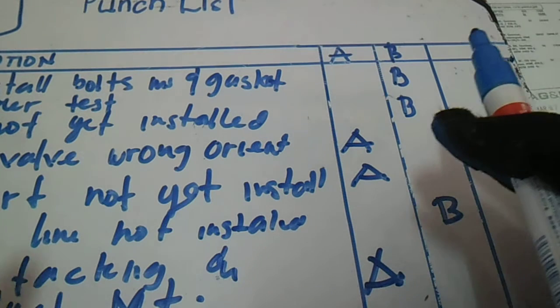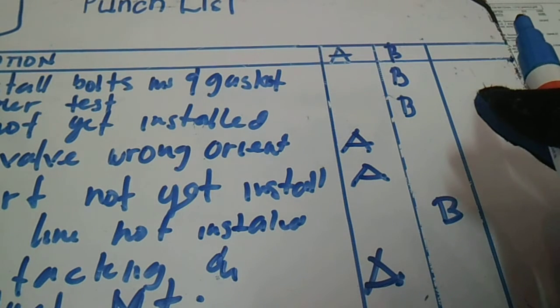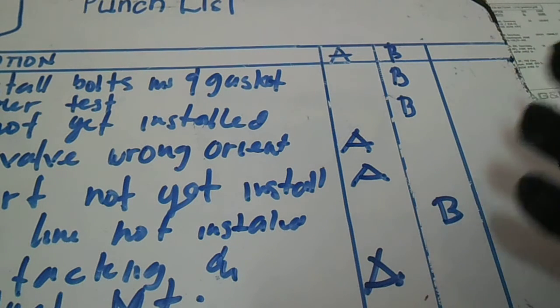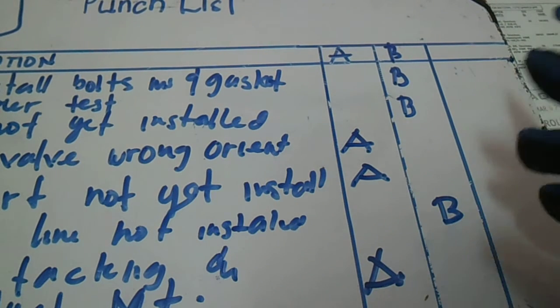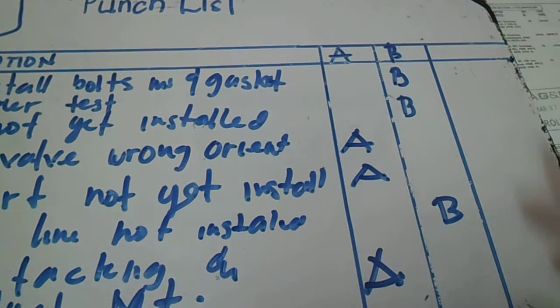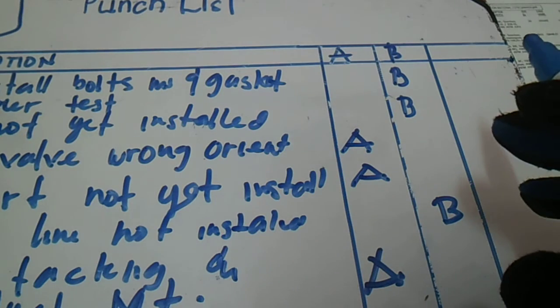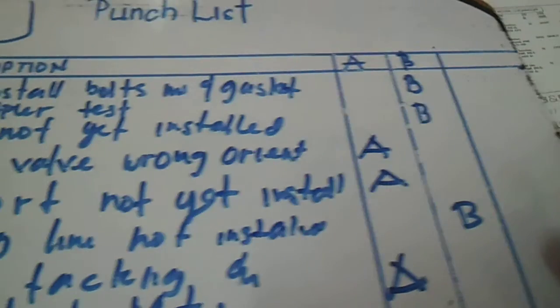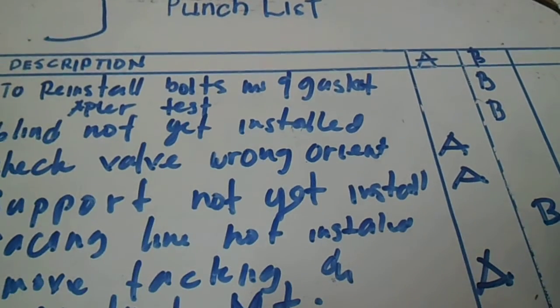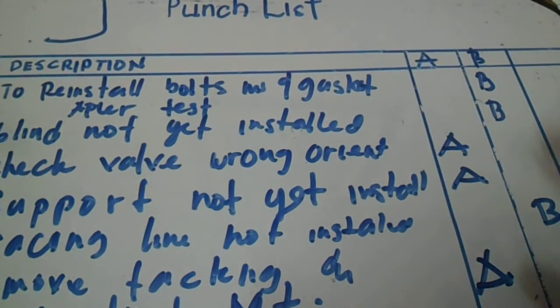After finishing the punch list, attach it to the test package and make a copy. Give the copy to construction so they can correct all the comments — install all not-yet-installed items, correct all wrong orientations, and conduct flush/empty.